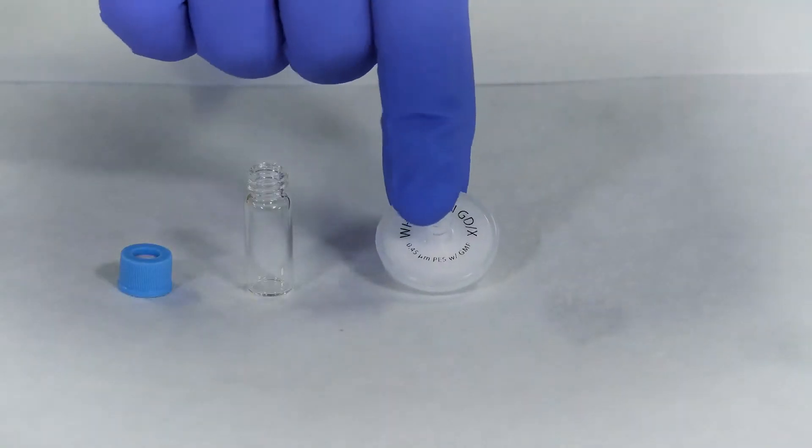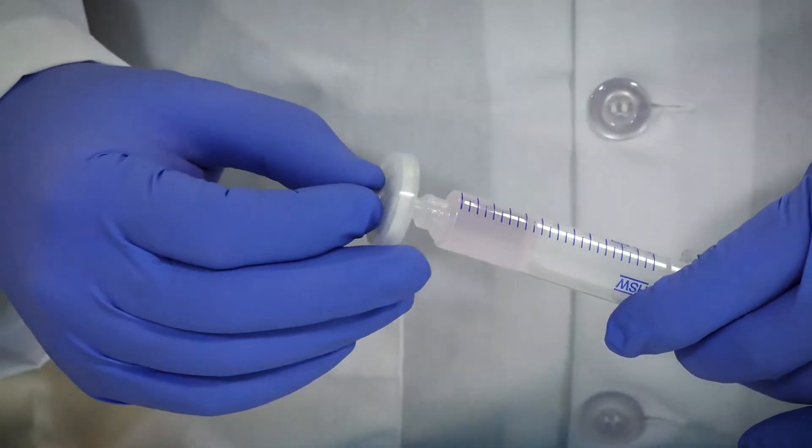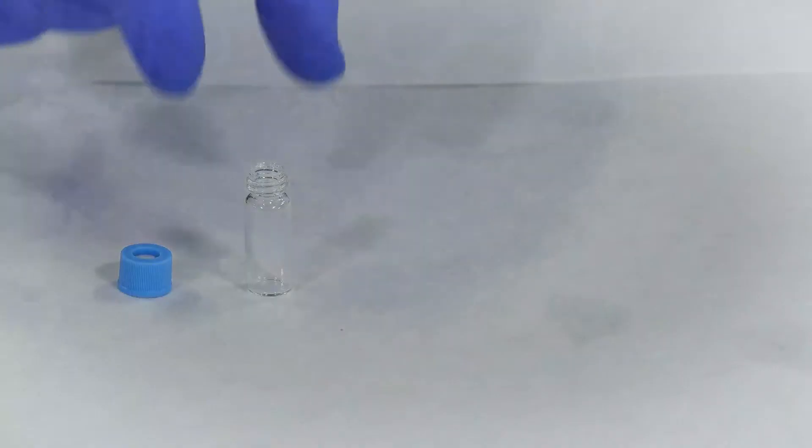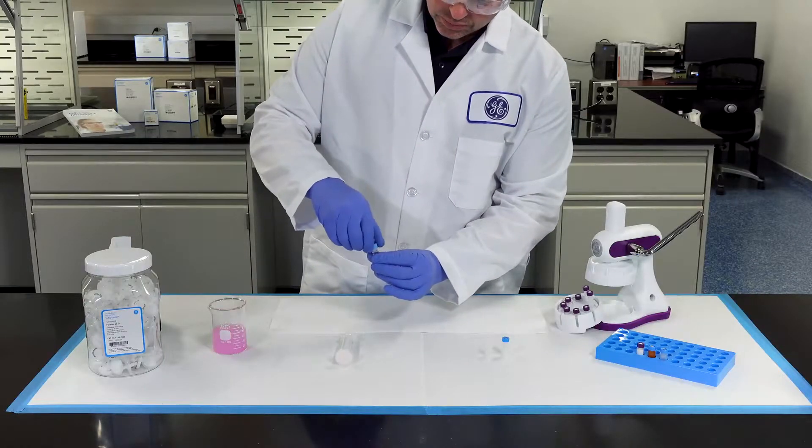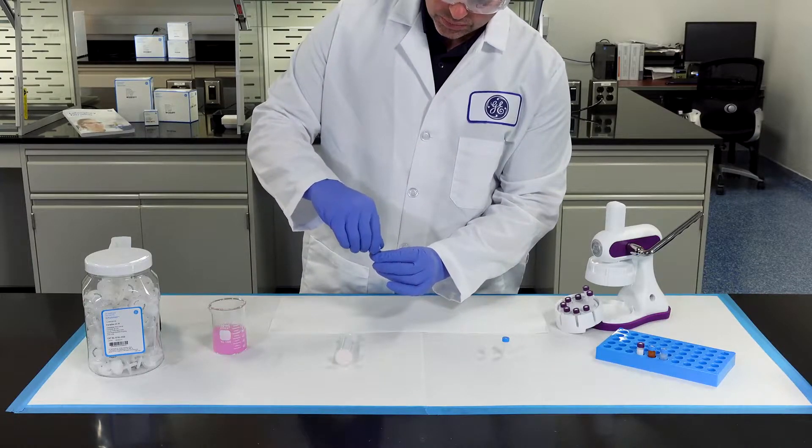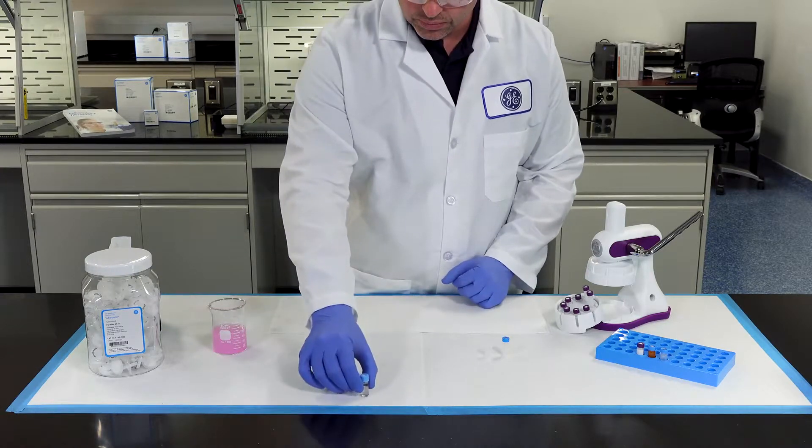Now, retrieve the filter and attach it to the syringe. Retrieve the vial and filter your sample. Now, attach the cap, and your filtered sample using the conventional approach is ready for sample injection.